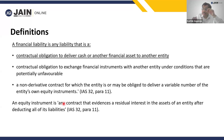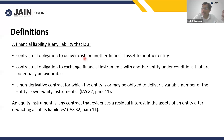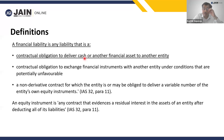A financial liability involves a contractual obligation to deliver cash. Examples include trade payables, or a loan instrument — debentures our company has raised, a loan note or a bond where we obtained 100 crore worth of money. That is a financial liability. As SBR students, we must say 'financial liability,' not just 'liability.' Those are the most common examples of financial liabilities.